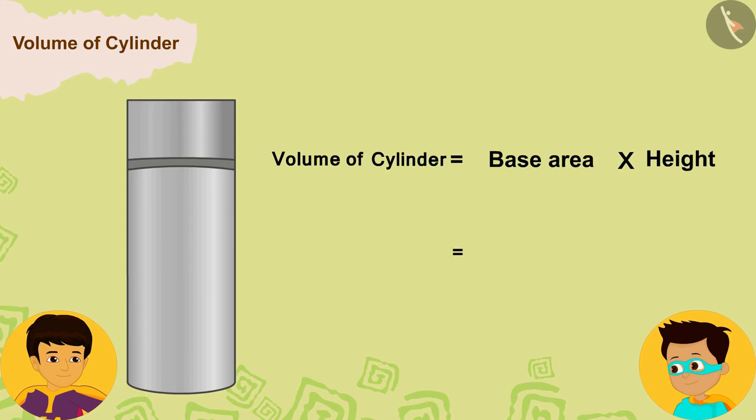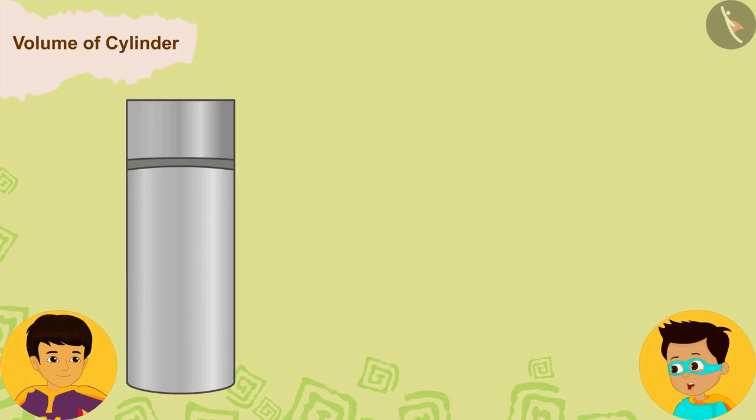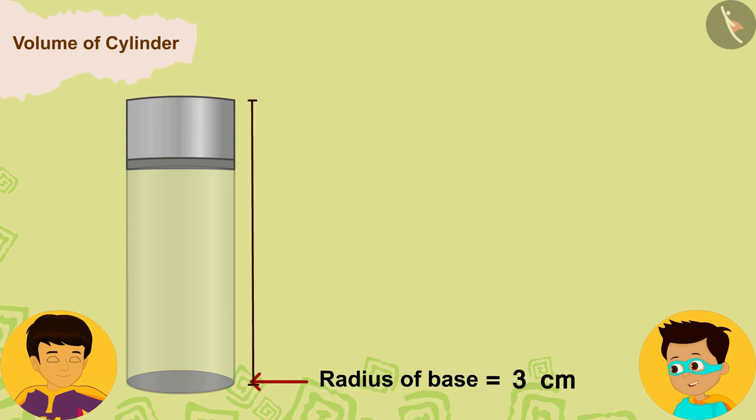And if the radius of the base of the cylinder is R and the height of the cylinder is H, then we can also write the formula of the volume of the cylinder as pi r squared h.